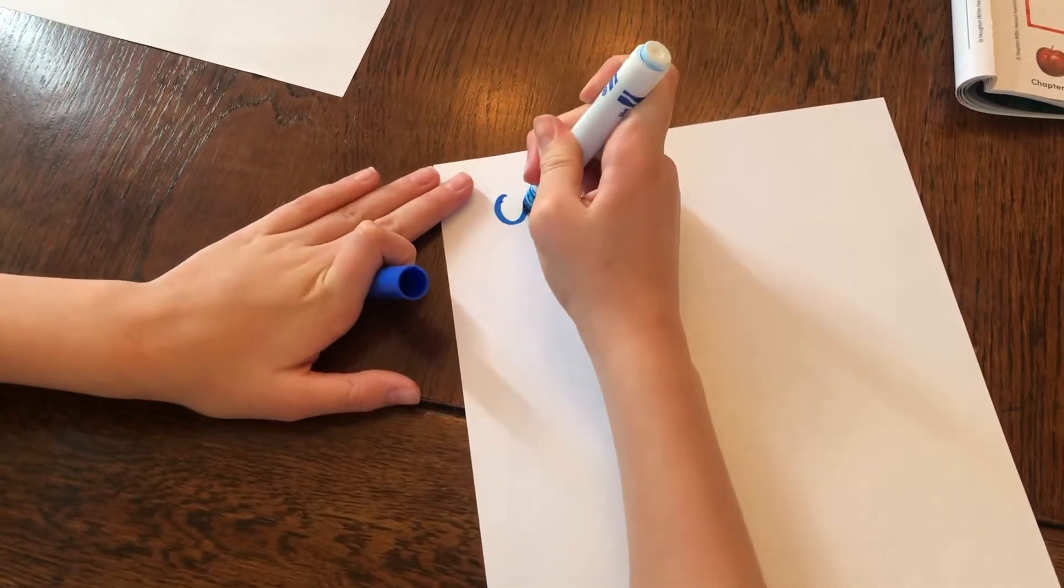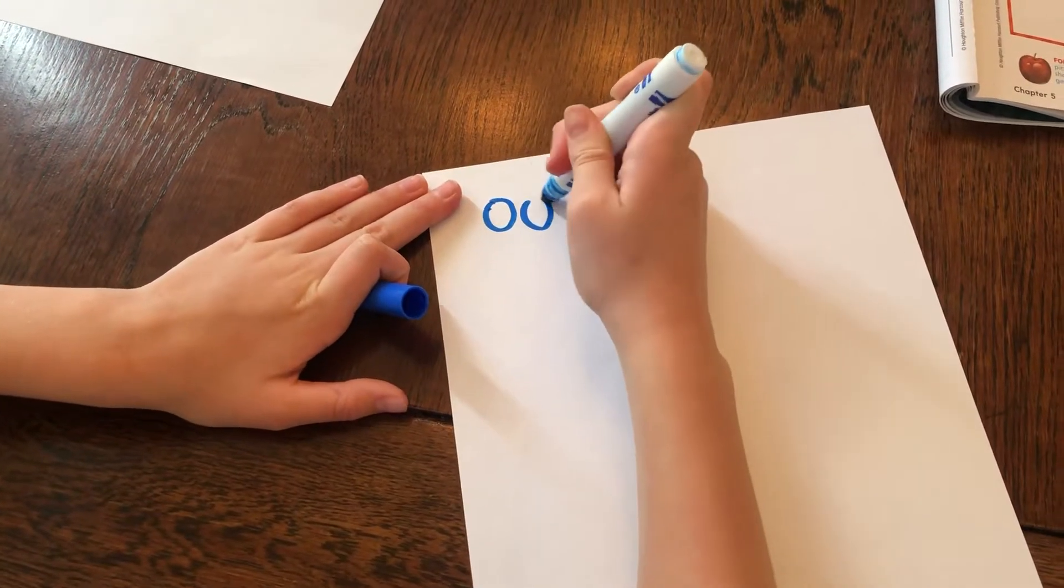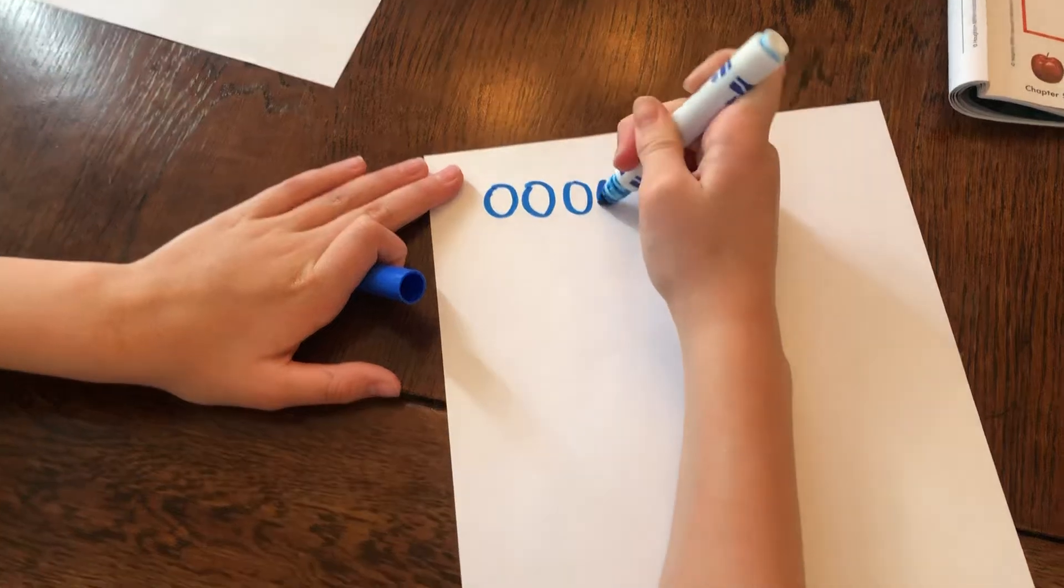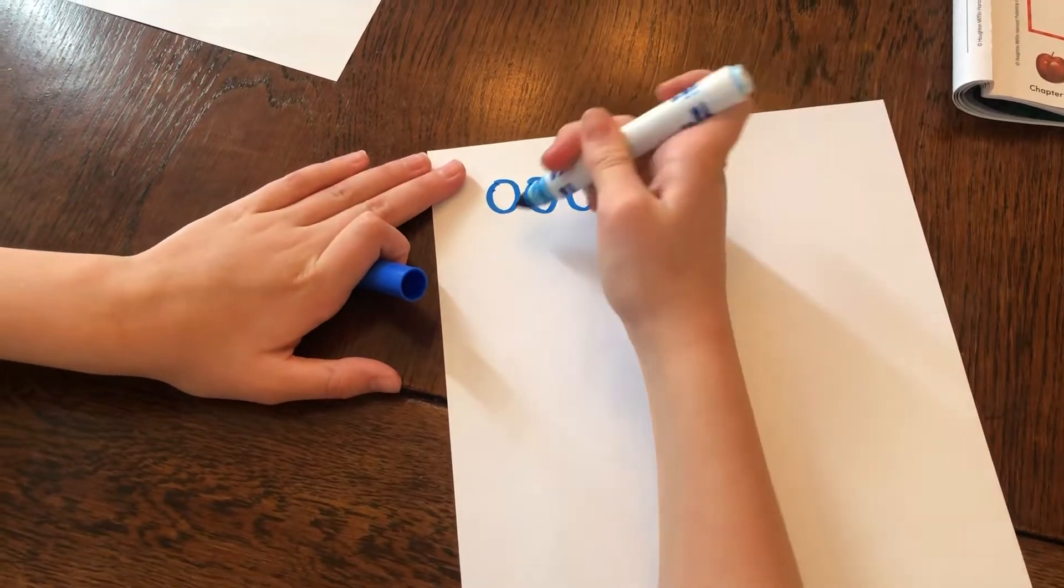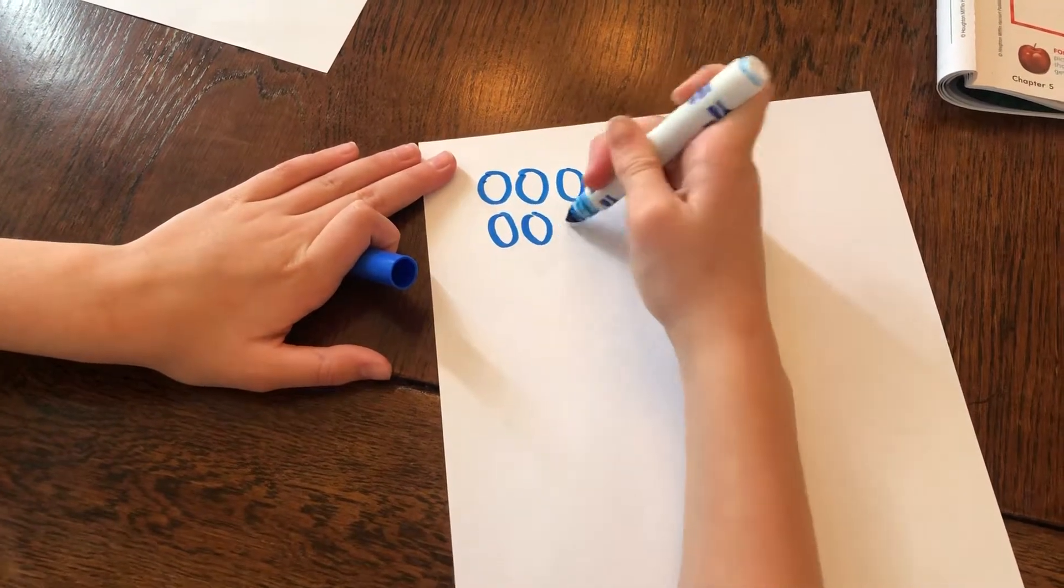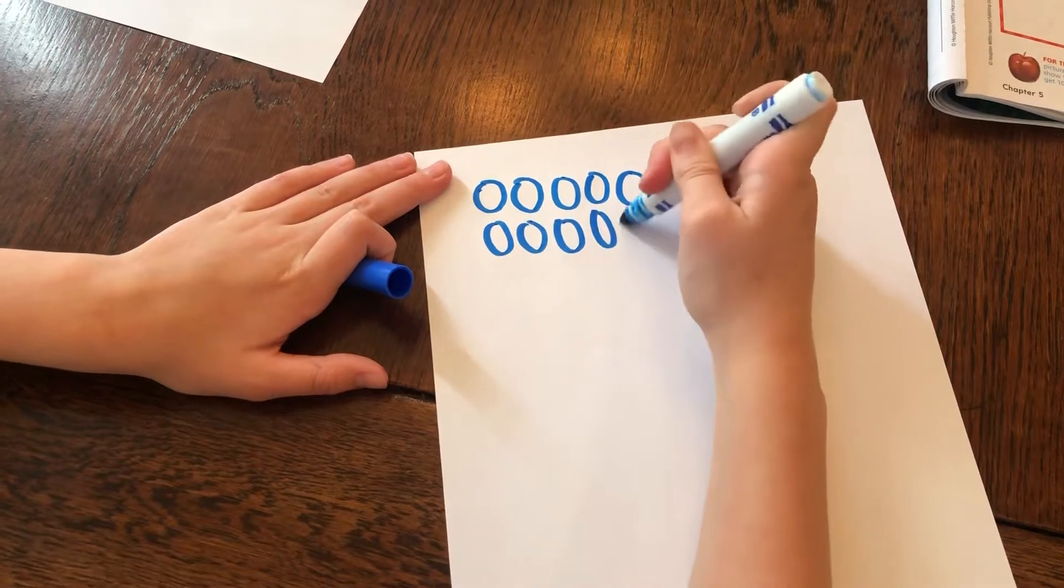So we could draw 10 circles. 1, 2, 3, 4, 5, 6, 7, 8, 9, 10.